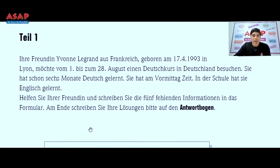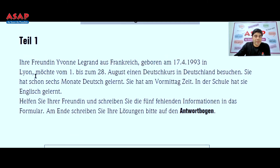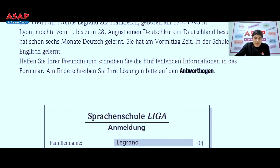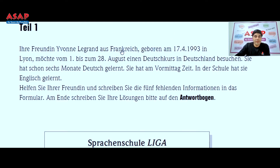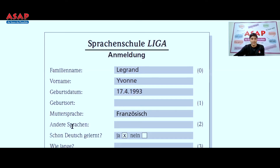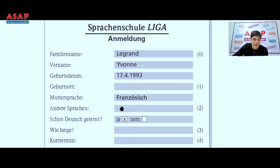Here is the form. 'Familienname' is surname — Legrand — that is already given. 'Vorname' — Werner. 'Geburtsdatum' — 24th April 1993. 'Geburtsort' — birthplace — where is she born? She was born in Lyon, so the answer is L-Y-O-N. 'Muttersprache' — she is from France so her mother tongue is French, which is already given.